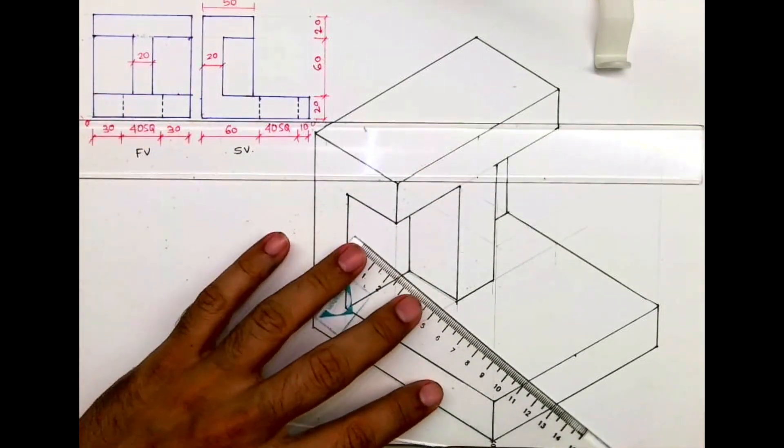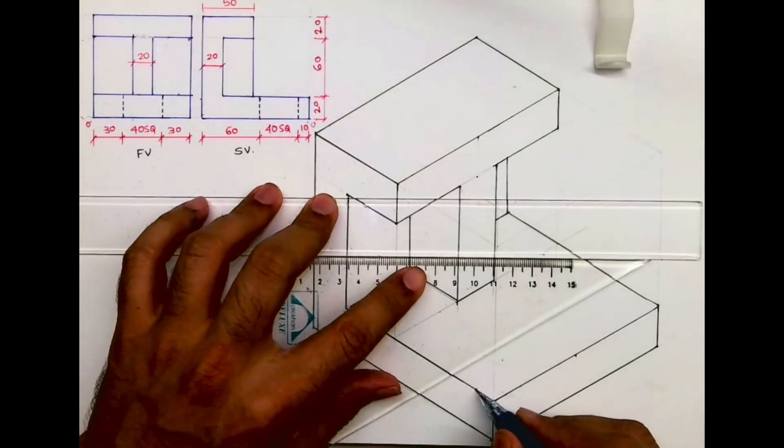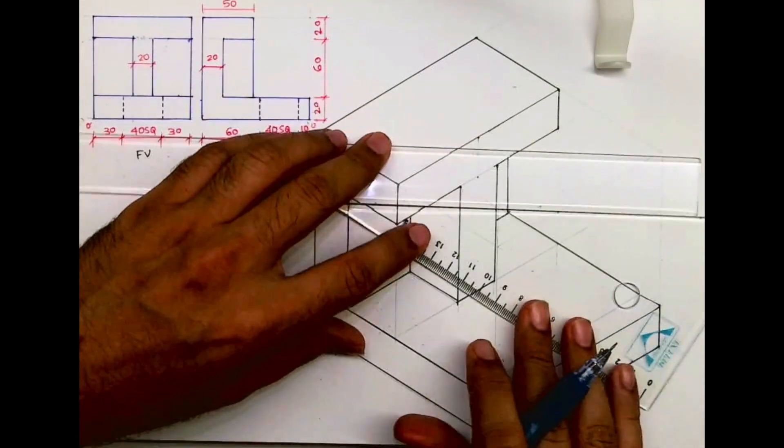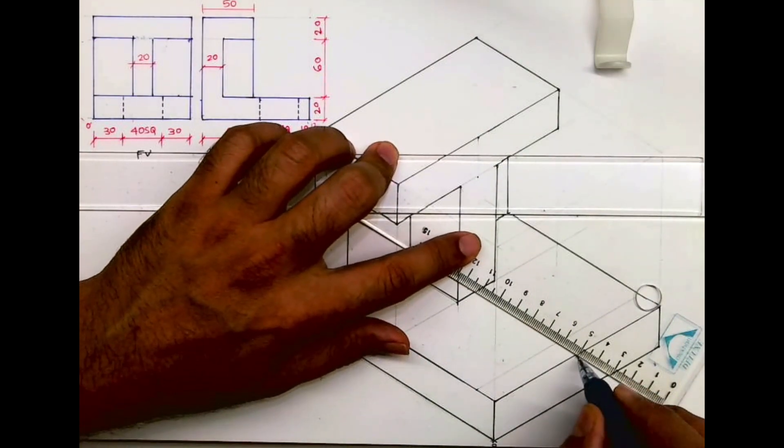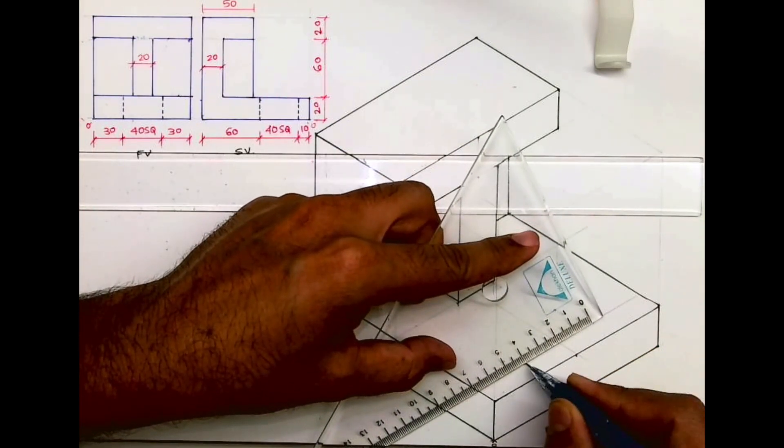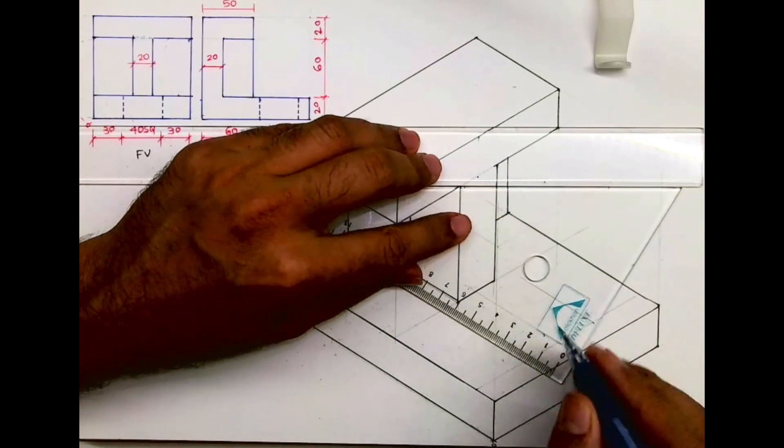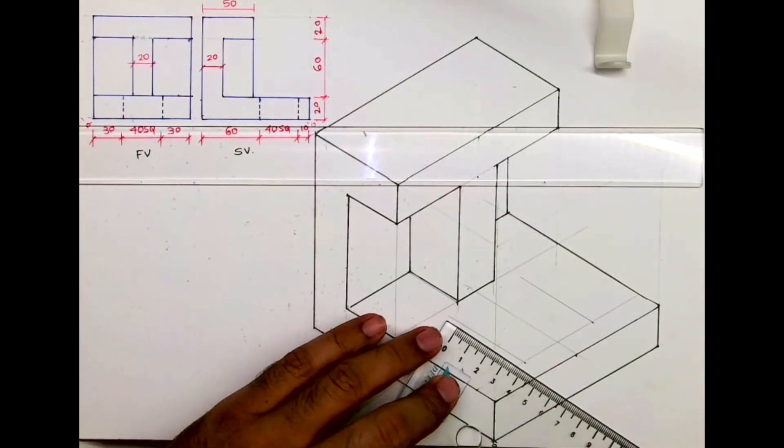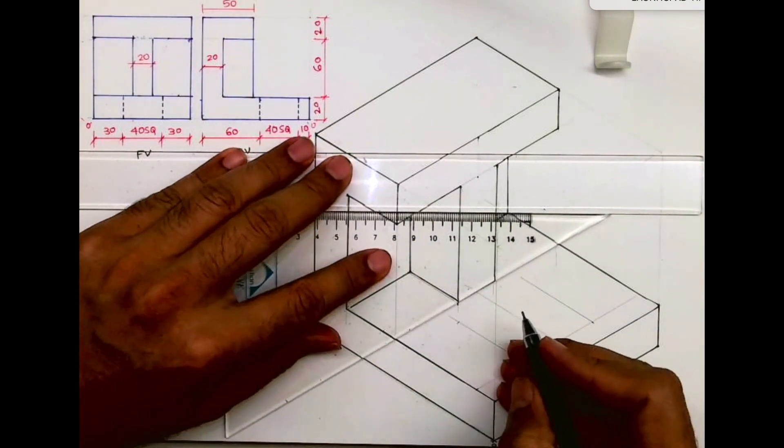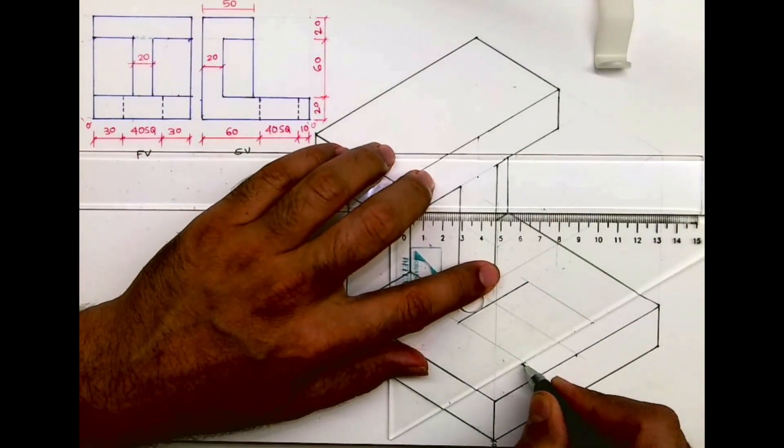Now we need to draw this 40 square. So to draw that we will take 10 from here, we will draw line, then it is mentioned 40. So from here we will draw a line. From center we will take 20, 20 on both the side, and from here we will draw a line like this. So we will get 40. So we will have 50, 40 square, so this much is dark.